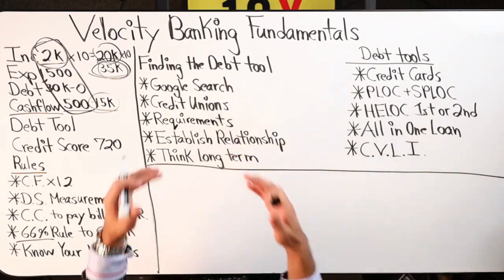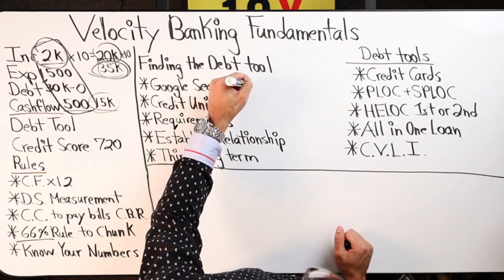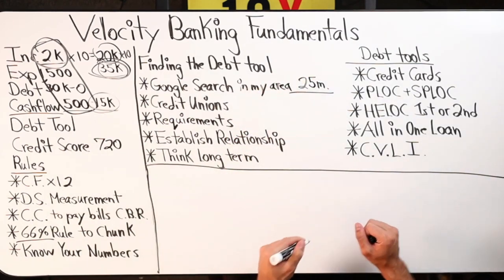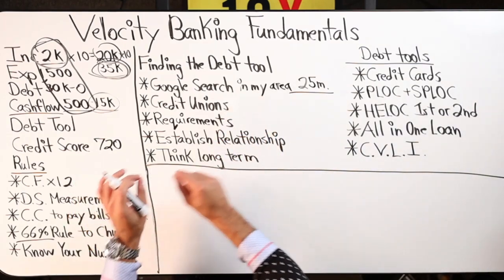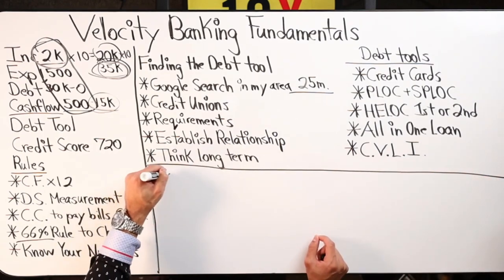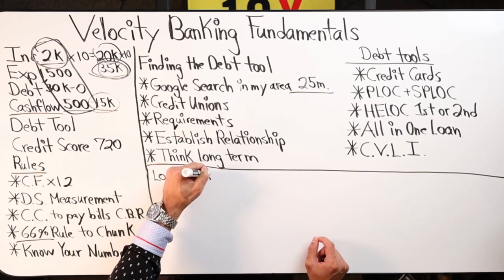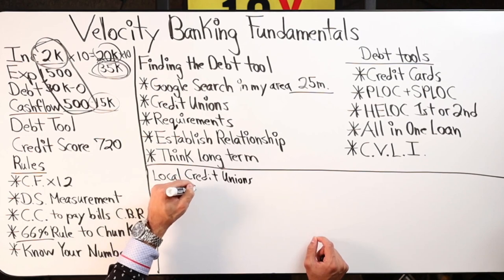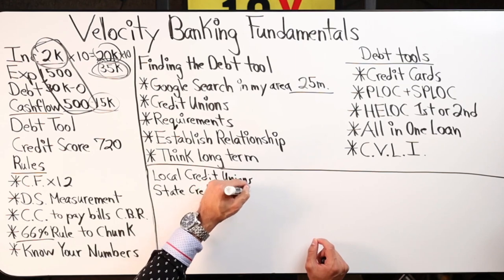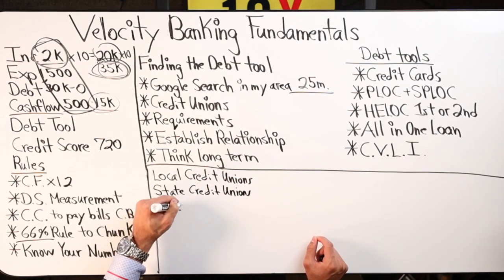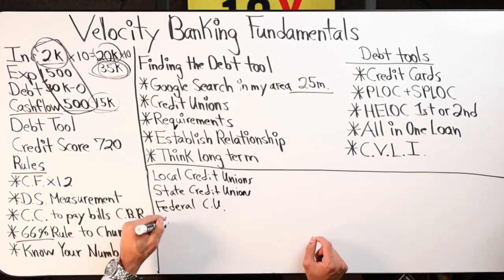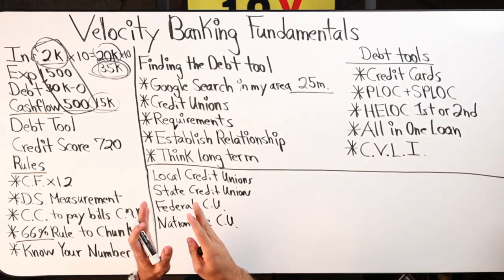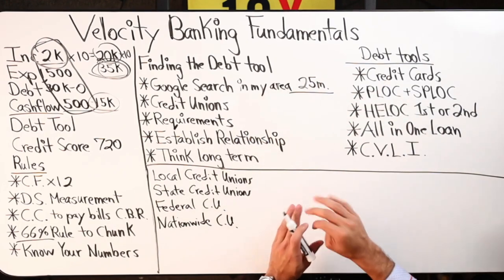In regards to finding the debt tool, the first thing I do is a Google search in my area — a twenty-five mile radius. I search 'local credit unions,' then 'state credit union,' 'federal credit union,' 'nationwide credit union,' and go on a hunt in my local area. I start there first. I then make a list of all the banks that I find.